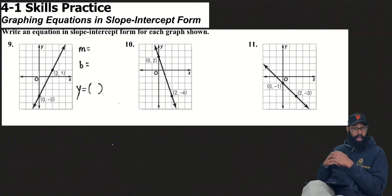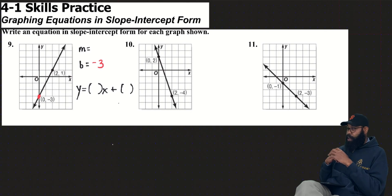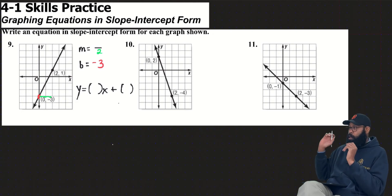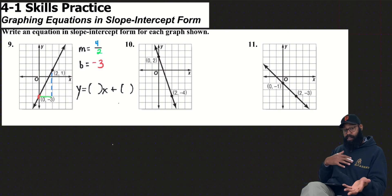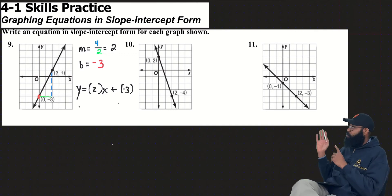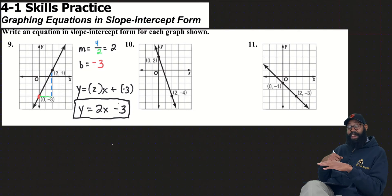I'm going to plug in m — that's the parentheses in front of x — and plug in b. Looking along the graph line, I recognize the y-intercept is negative 3. I can find my slope by counting: the run is 2, then I count the rise — 1, 2, 3, 4. So rise over run is 4 divided by 2, which equals 2. With m equal to 2 and b equal to negative 3, the final answer is y equals 2x minus 3. I did not do any math — I just counted.